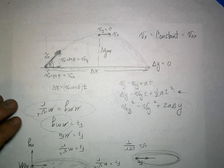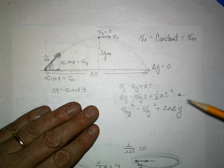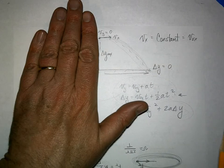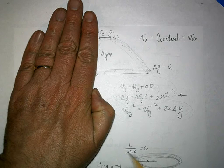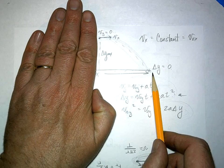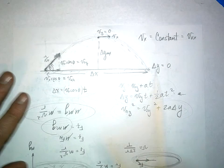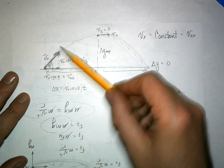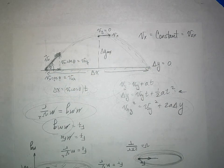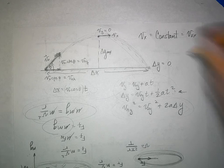So with projectile motion you have two problems: the cliff problem where you launch horizontally and the object falls, and the football or kickoff problem where the object is launched at an angle. There will be a problem like this on the test.